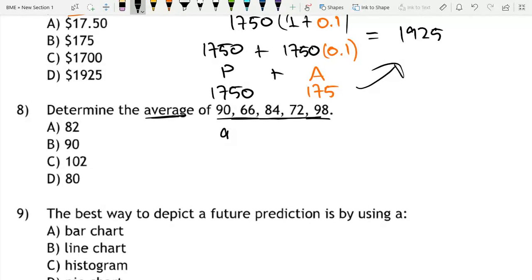But now we would just do 90 plus 66, because average is just our total number over our number of terms. So plus 84, plus 72, plus 98, and we have 1, 2, 3, 4, and 5 terms. So this would have to be divided by 5.